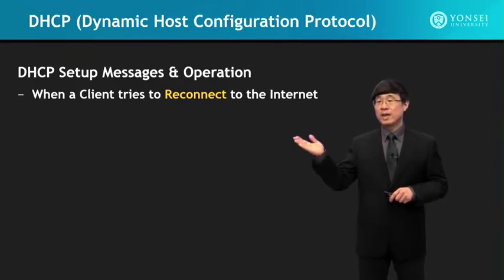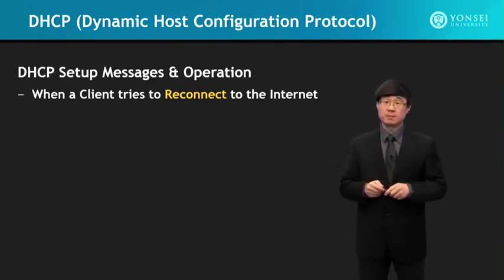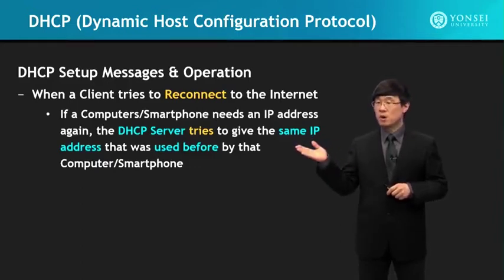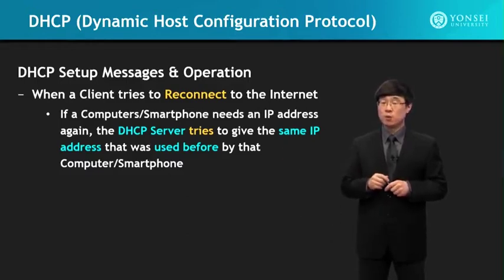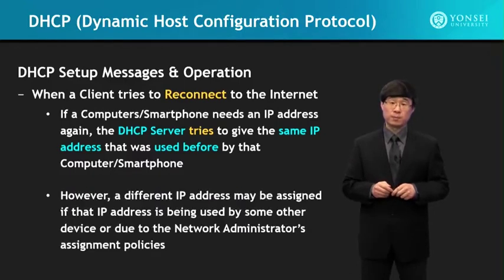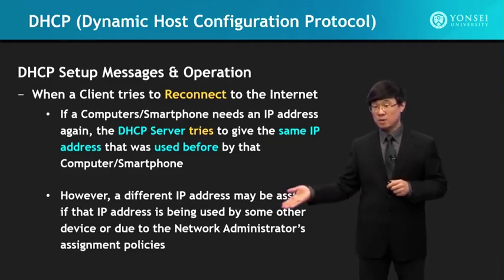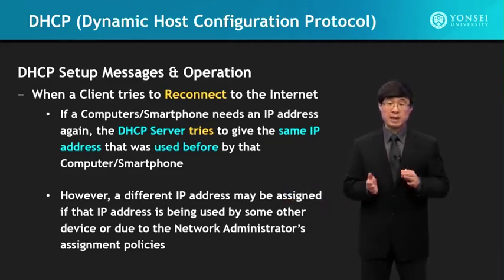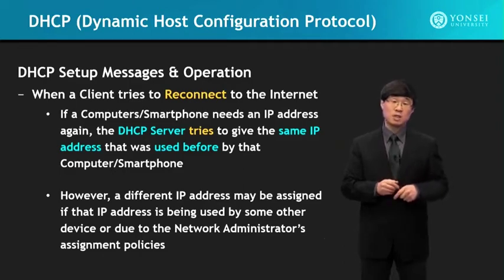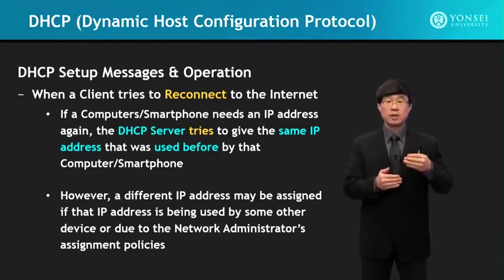When a client tries to reconnect to the Internet, if a computer or smartphone needs an IP address again, the DHCP server tries to give the same IP address that was used before. However, a different IP address may be assigned if that IP address is being used by some other device, or due to the network administrator's assignment regulations — for example, to prevent giving a device the same IP address for security reasons.